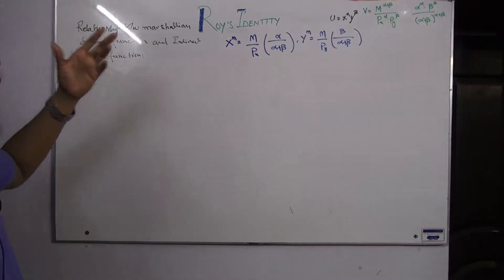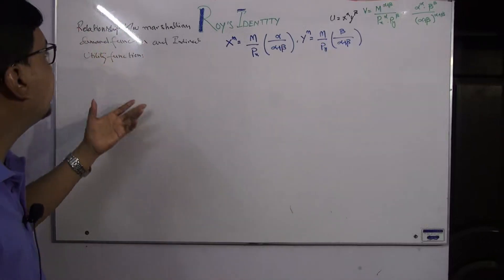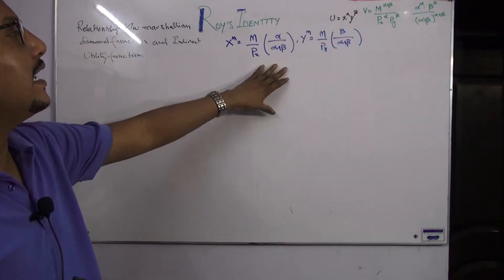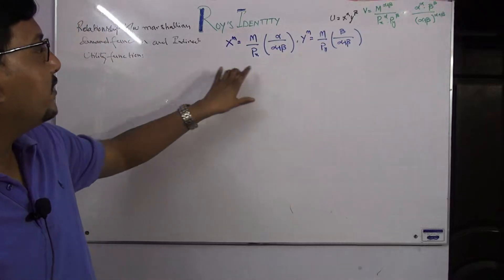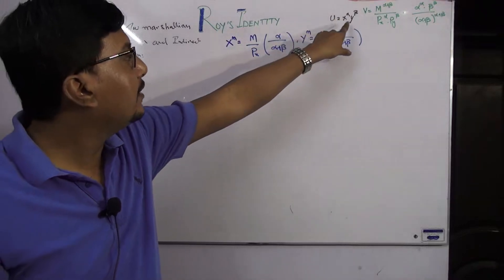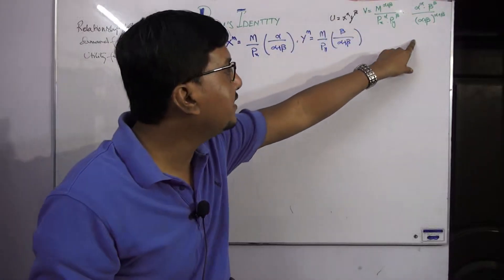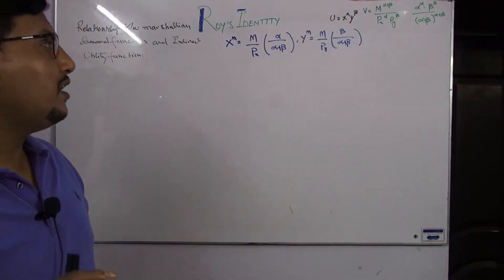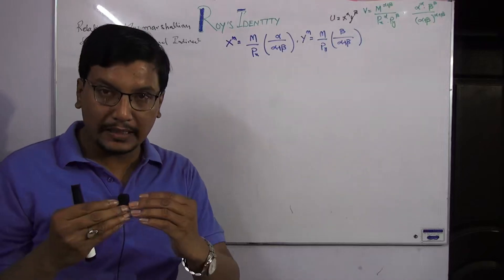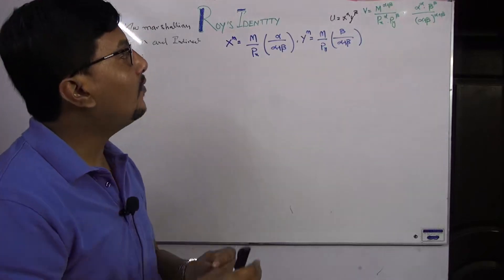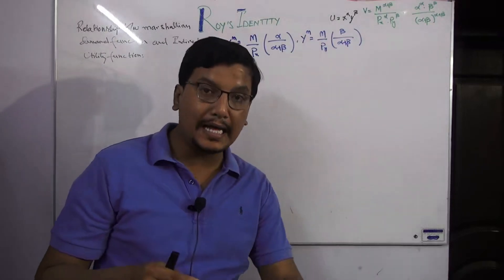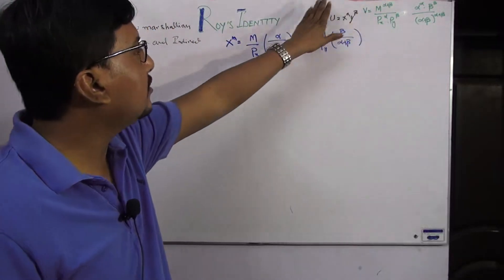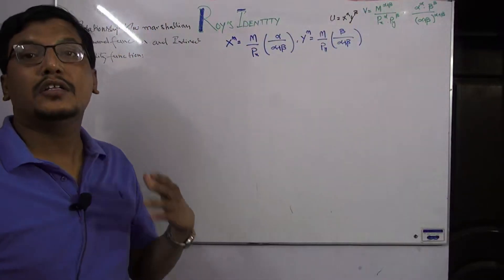Roy's Identity is basically the relationship between the Marshallian demand function and the indirect utility function. If we plug these Marshallian demand functions into the utility function, we get the indirect utility function. The utility function is a function of x and y, but the indirect utility function is a function of the prices of x, prices of y, and income.